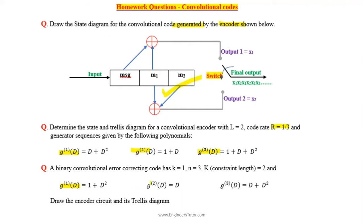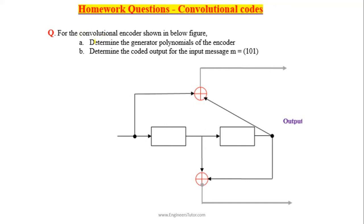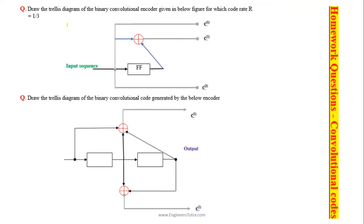Three generator polynomials are given — this is also a 1-over-3 code. Draw the encoder circuit and the trellis diagram. Here the circuit diagram is given; find the generator polynomials and the output of the encoder for the given message 101. For the 1-over-3 convolutional encoder, draw the trellis diagram.